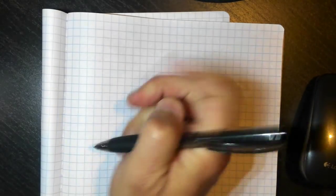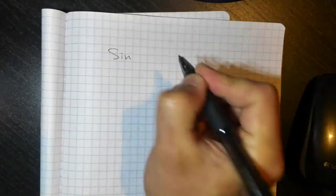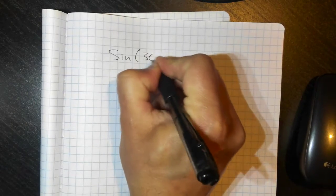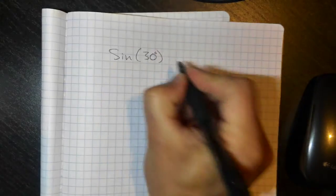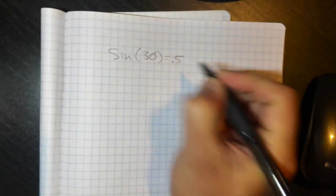But if I was going to do something like sine of 30 degrees, I'd end up with, if I took sine of 30 degrees, I'd end up with 0.5 in my calculator.